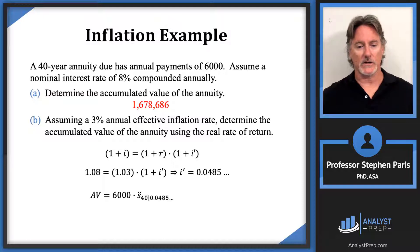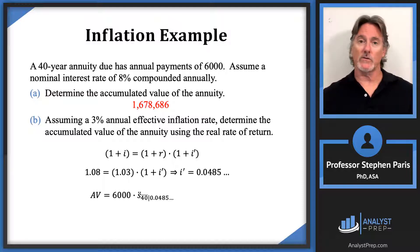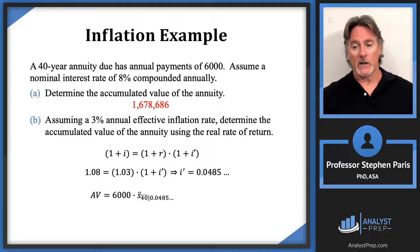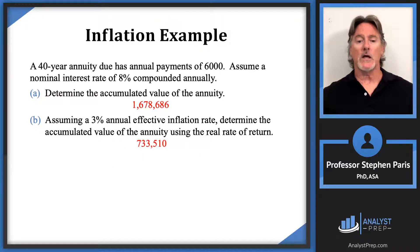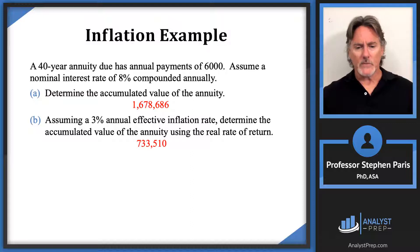Now the question is just to determine the accumulated value using this four point eight five percent instead of the eight percent annual effective interest rate. When I do this calculation on the TVM I get seven hundred and thirteen thousand five hundred and ten.